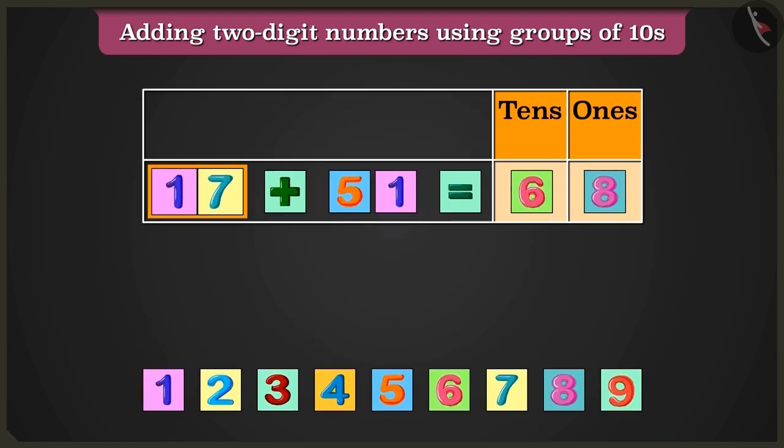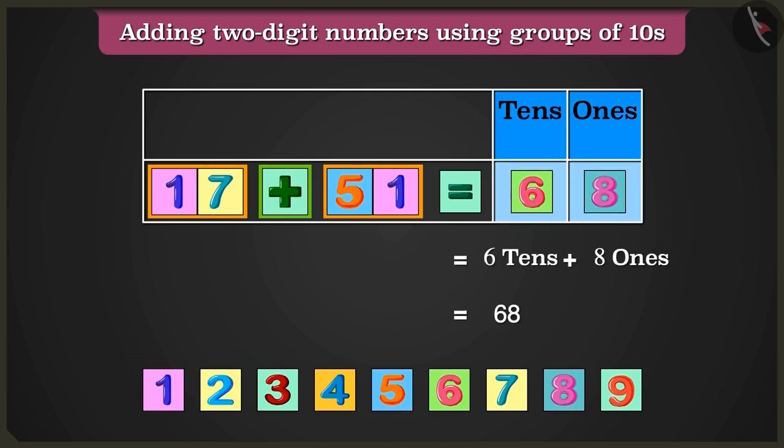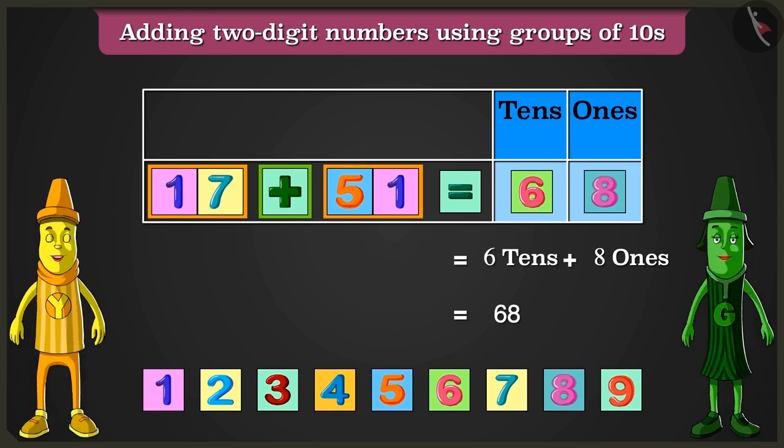This way, 17 and 51 added up to 6 tens and 8 ones that are a total of 68. Now, you got it right, Greeny. Well done.